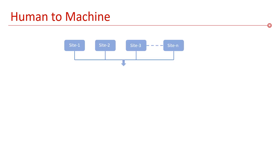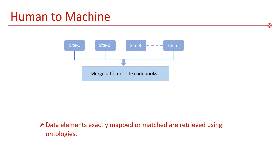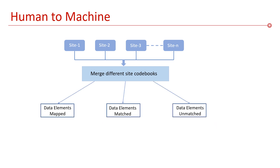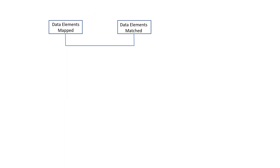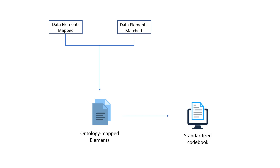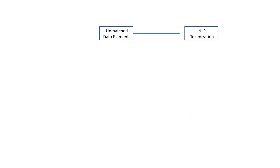In the human-to-machine process, different research sites' code books are matched and data elements retrieved can be exactly mapped or matched using ontologies, or unmatched. The ontology-mapped data elements are retrieved and added to the standardized data element set, which is a non-redundant set of data elements that provides a reconciled view of different sites' data elements or code books.